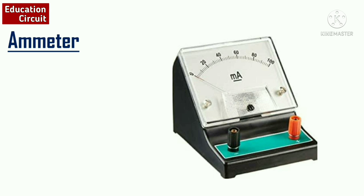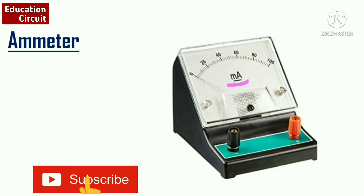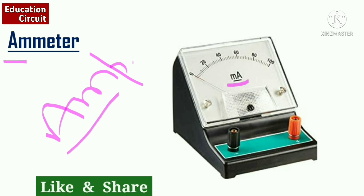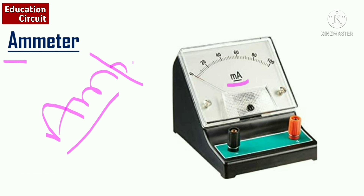The first one is the ammeter. An ammeter is used to measure electrical current — the electricity we use in our homes, offices, and companies. The unit of current is ampere. You can see on the scale there is milliampere, so it gives readings in milliampere. For memorizing it, you can relate 'ammeter' with 'ampere' — both share the letters 'am', so you can easily remember that the ammeter is used to measure current.